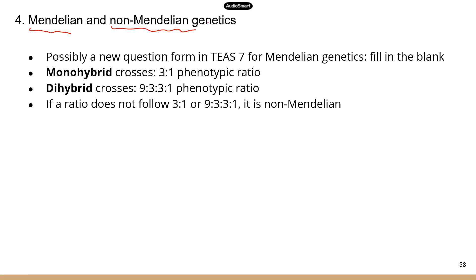And then you can plug in numbers. If it doesn't fit those patterns, then it's going to be non-medallion genetics. Before we go to those numbers, I just want to point out that there is a new question format in T7, and this is fill-in-the-blank.